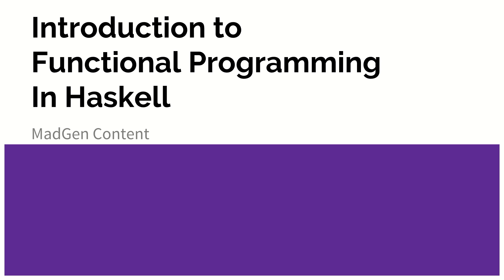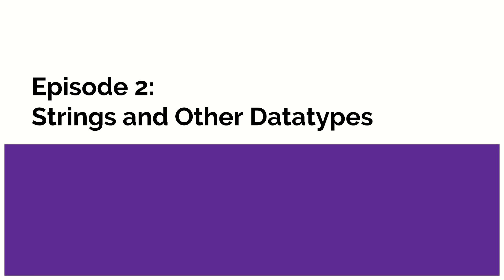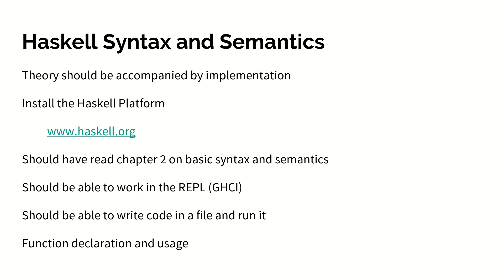Welcome to Intro to Functional Programming in Haskell. Today we're going to be talking about strings and other data types. As an aside, you should have already read Chapter 2 of the Haskell book, which goes over basic syntax and semantics. You should have installed the Haskell platform, be able to work in the Haskell REPL GHCI, write code in a file and run it, and declare a function and use it.